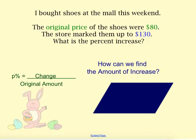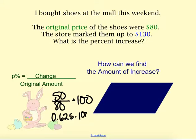I'll use the formula for this one. The original price of the shoes were $80. The store marked them up to 130. So what's the percent increase? Well, they marked them up to 130, meaning they added $50. So that would be my change. The original amount is 80 and then we will multiply by 100. So 5 eighths as a decimal is 0.625. We multiply by 100 to get it as a percent and we find that it's 62.5%. That would be our percent increase.